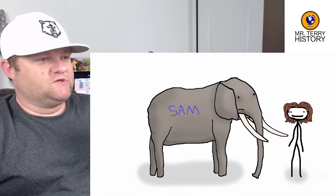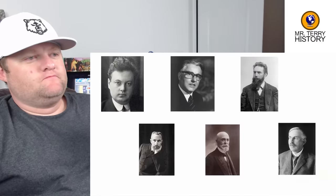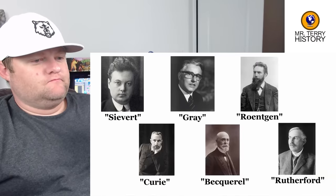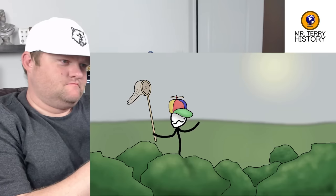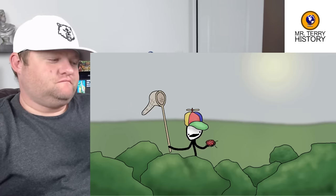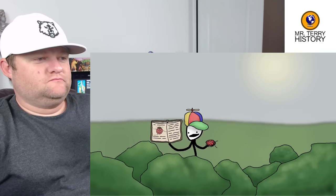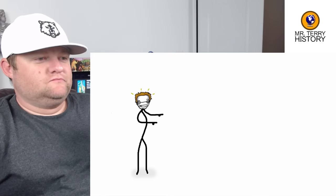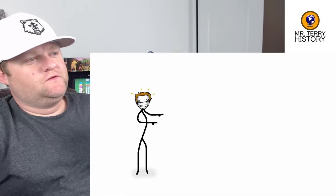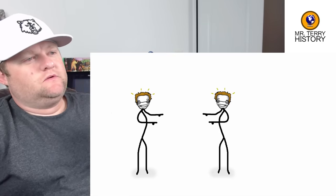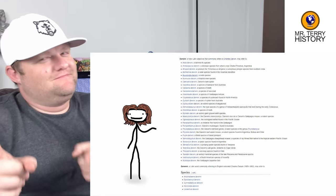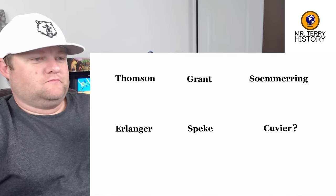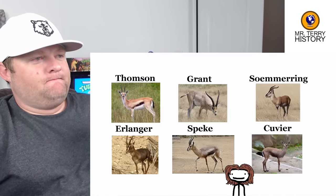There's no better way to go down in history than plastering your own name on something you found. Not all fields have the same volume of things to put your name on. In Zoology, any little goober flouncing through the underbrush can say, 'This one has 13 spots but the one in the books only got 11 — I will call him Splinkus's Lady Bird.' Plenty of biologists have also given shout-outs to their contemporaries, from geologists to physicists to explorers. Naturally, Darwin's got a shitload, but even background characters get immortalized — Thompson, Grant, Summering, Erlinger, Speak, and Cuvier all have gazelles, so they must be pretty cool.